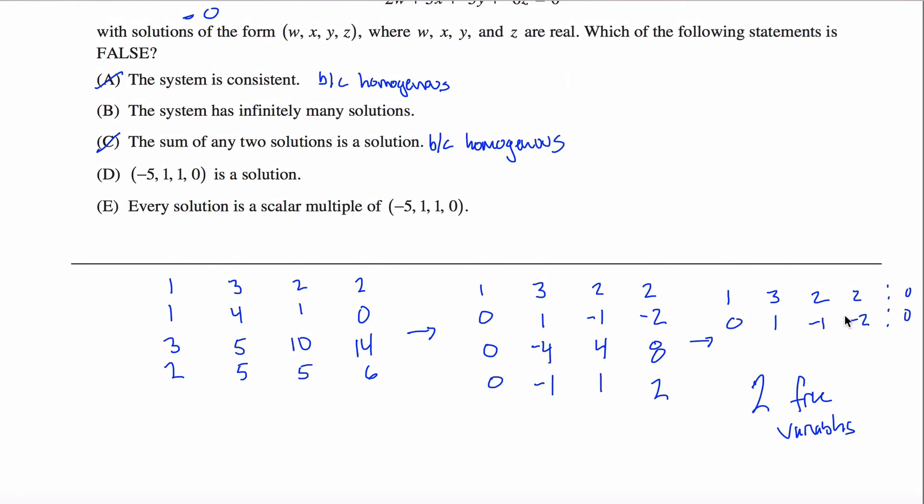So figure out what negative one times whatever you chose for y was and negative two times whatever you chose for z were and sum those up. And then what I will do is I will choose x so that when I add x to whatever numbers you came up with, I'll get exactly zero. And you're like, wait, but that just satisfies this equation. What about the one above it? Well, when I plug in my value for x and your values for y and z, I'll get some number right here. And once I know what that number is, I can choose w accordingly to zero out this whole thing.